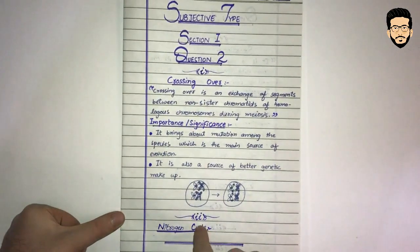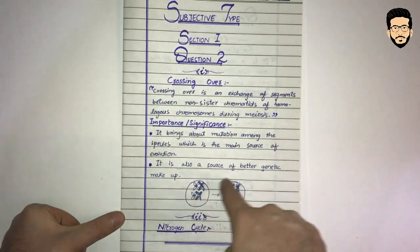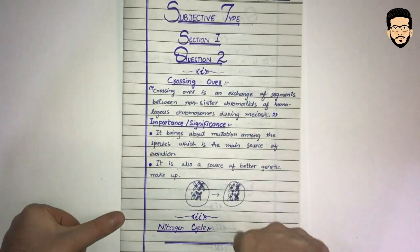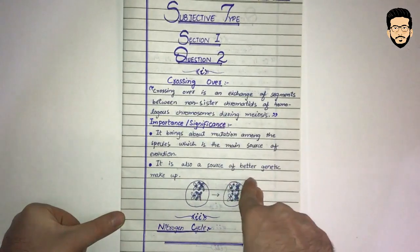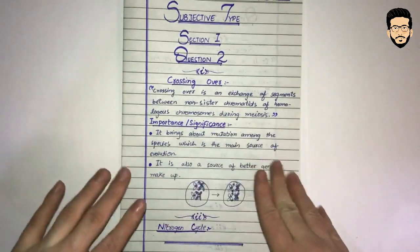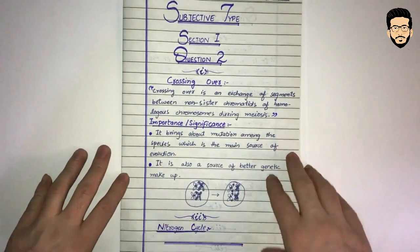This is the cycle. Now we have the nitrogen cycle diagram. It's a review or overview.